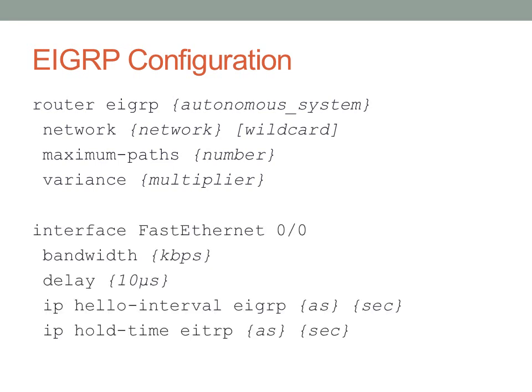To apply EIGRP on an interface, you can manipulate the bandwidth or delay, both of which are used for EIGRP cost calculations as discussed earlier. You can also manipulate the hello interval and hold time for EIGRP.